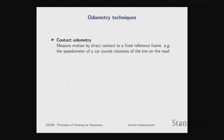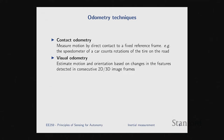Dead reckoning requires odometry — you need to know your velocity — and there are different ways of doing it. The simplest is contact odometry: measuring motion via direct contact to a reference surface. That's how cars do it — they count the number of rotations of the tire on the road to determine speed. Then we have visual odometry.